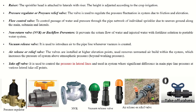The pressure regulator or pressure relief valve is used to control the pressure. It regulates pressure fluctuations in the system where there is high friction or high elevation. In such conditions, this type of pressure regulator is used.